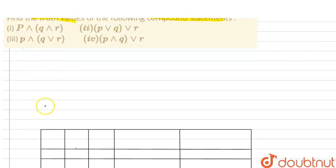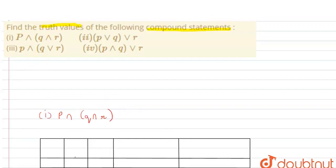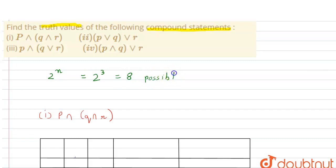The first compound statement is p ∧ (q ∧ r). There are three variables: p, q, r. Before we make the truth table, we have to know the number of possible outcomes. We have a formula: 2^n, where n is the number of variables. Since the number of variables is 3, we get 8 possible outcomes, meaning 8 rows in the truth table.